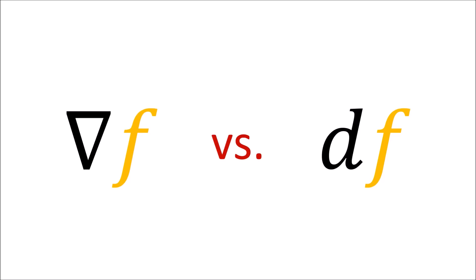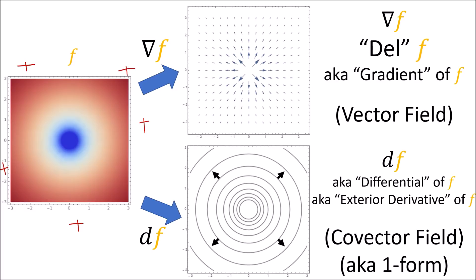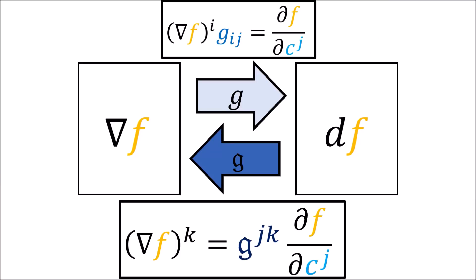If you watched the last video you should already know the basic differences between del f and df. Del f, which I also called the gradient of f, is a vector field where the vector arrows point toward the positive values of f. On the other hand, df is a covector field where the covector curves are oriented towards the positive values of f. The way we convert between the components of del f and df is by using formulas which use the components of the metric tensor and the inverse metric tensor.